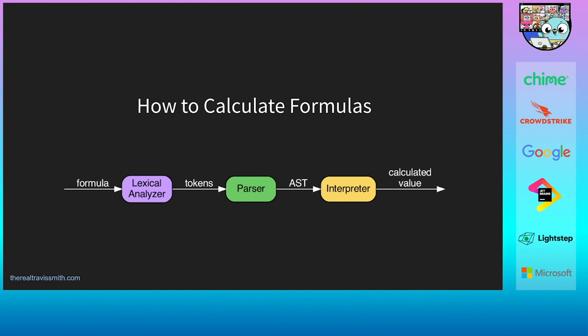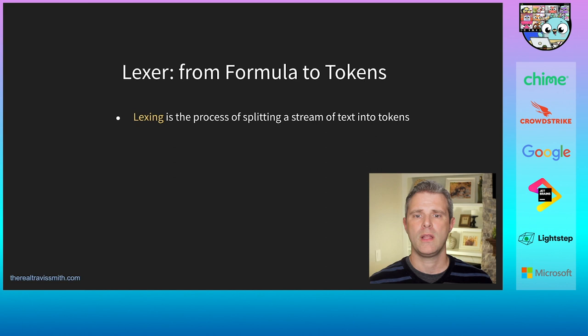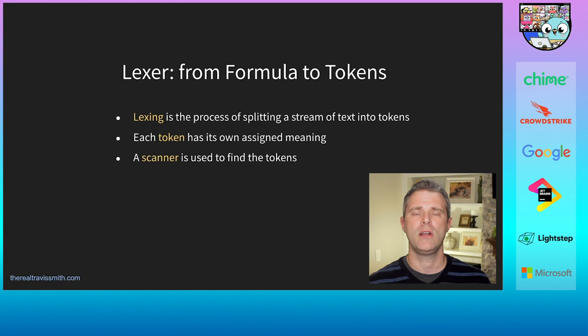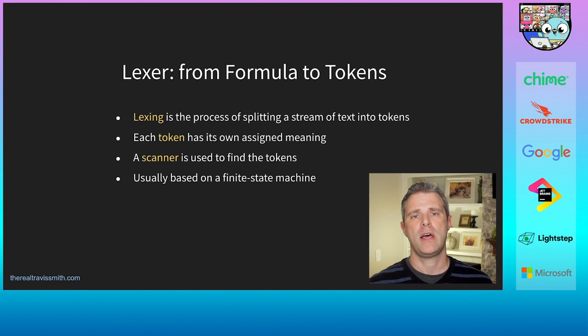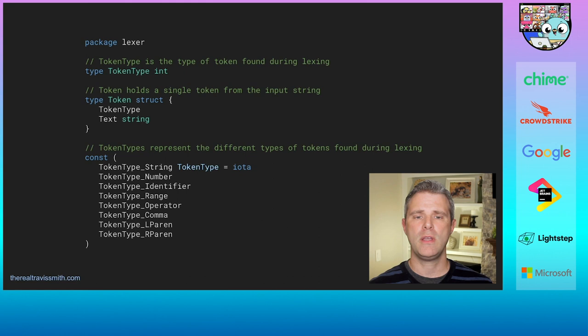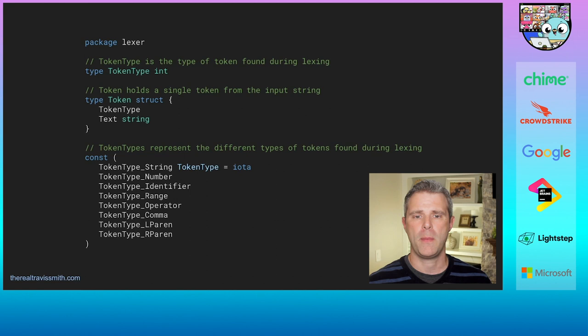Calculating a formula has three main steps: lexical analysis, parsing, and interpreting. Lexing is the process of splitting a stream of text into tokens, where each token has its own assigned meaning. We use a scanner to find tokens in the input stream, most likely based on a finite state machine. In our Lexer package, the token struct includes the text from the formula and the token type, which assigns meaning. We have many token types including string, number, identifier, range, comma, and parentheses.